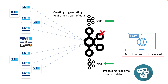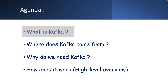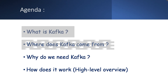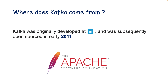Now let's move to the next point: where does Kafka come from? Kafka was originally developed at LinkedIn and was subsequently open sourced in early 2011. This Kafka software now comes under the Apache Software Foundation.